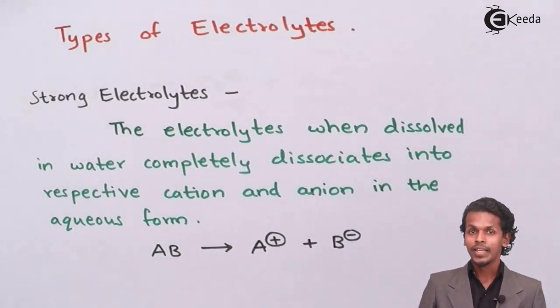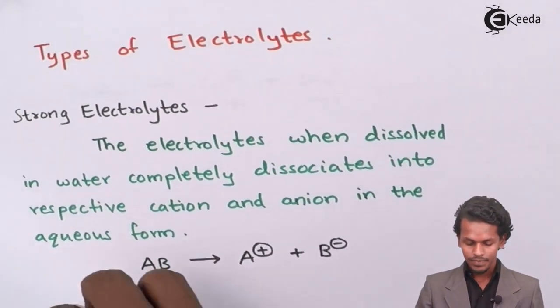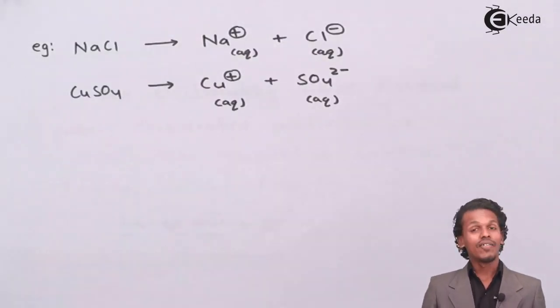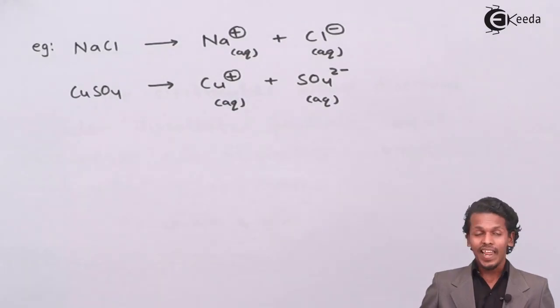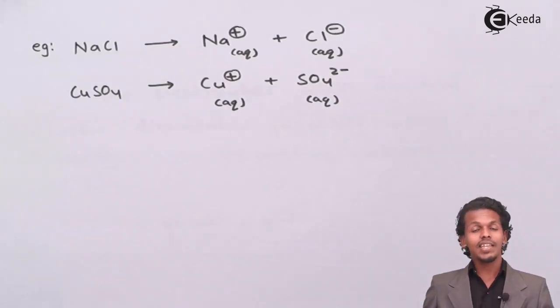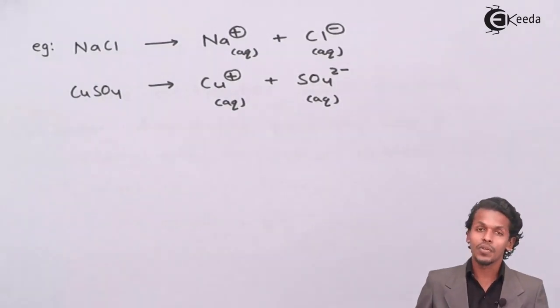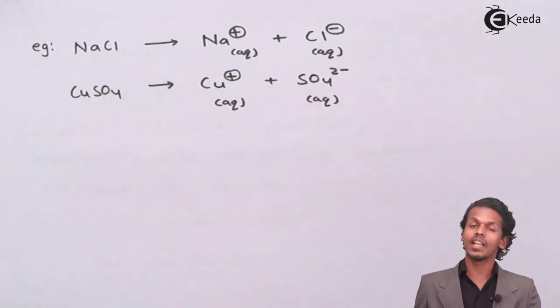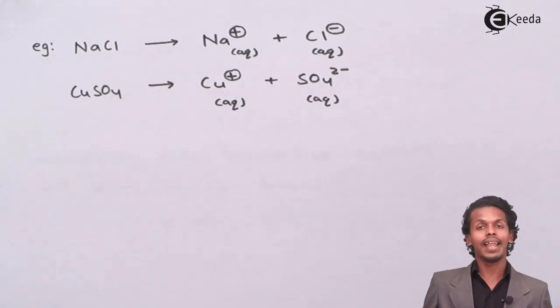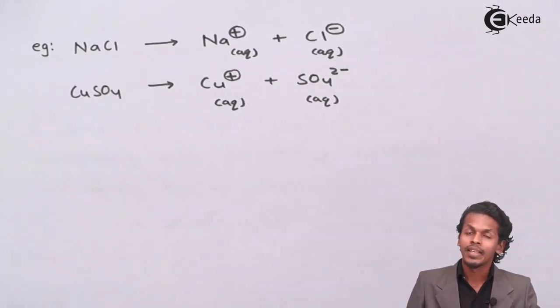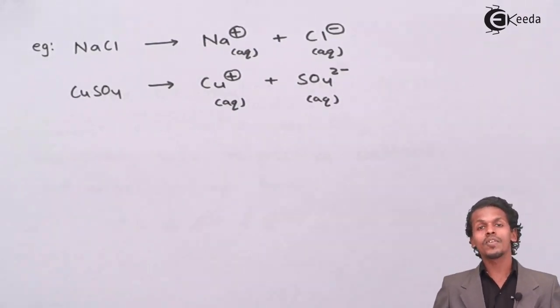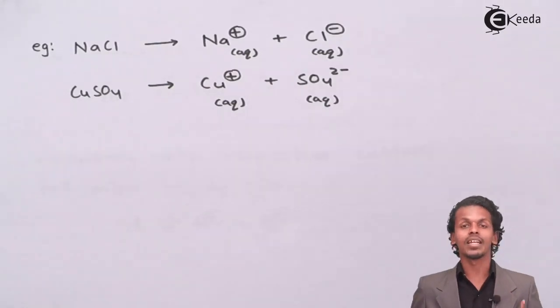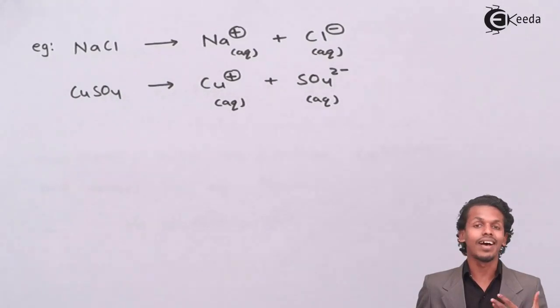So for example if I consider NaCl, NaCl when present in an aqueous solution dissociates completely into Na+ and Cl-, that is sodium cation and chloride ion. In this case the number of moles of sodium ion and number of moles of chloride ion that are produced in the aqueous solution are the same because they have dissociated completely when dissolved in water.